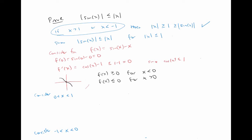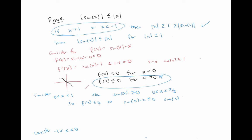Okay, so if x is positive and less than one, then notice that sine of x is also positive, because x is between zero and pi over two. So we have from here that f of x is less than zero. So that means that sine of x minus x is less than zero, so sine of x is less than or equal to x. But since sine of x is positive, that's the same thing as the absolute value of sine of x. And since x is positive, that's the same thing as the absolute value of x. So we have that the absolute value of sine x is less than or equal to the absolute value of x, as we wanted.